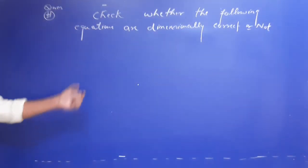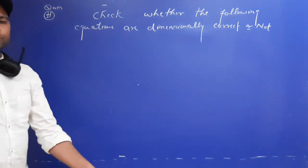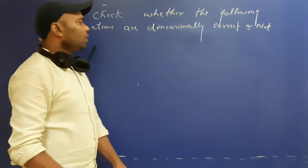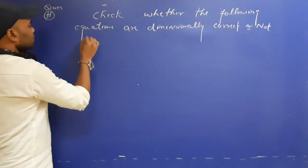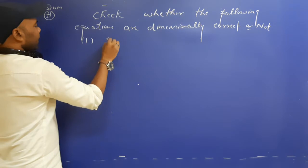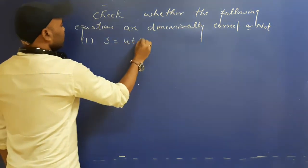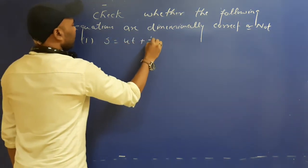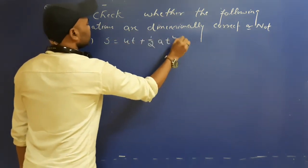Check whether the following equations are dimensionally correct or not. The first equation is: S equals ut plus half at squared.